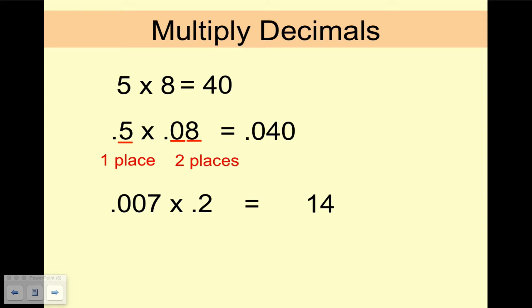Multiplying 0.007, think James Bond, times 0.2. Well, 7 times 2 is 14. And we just have to place the decimal point. So this would be 3 places and 1 more for a total of 4 places. The answer will be 0.0014.